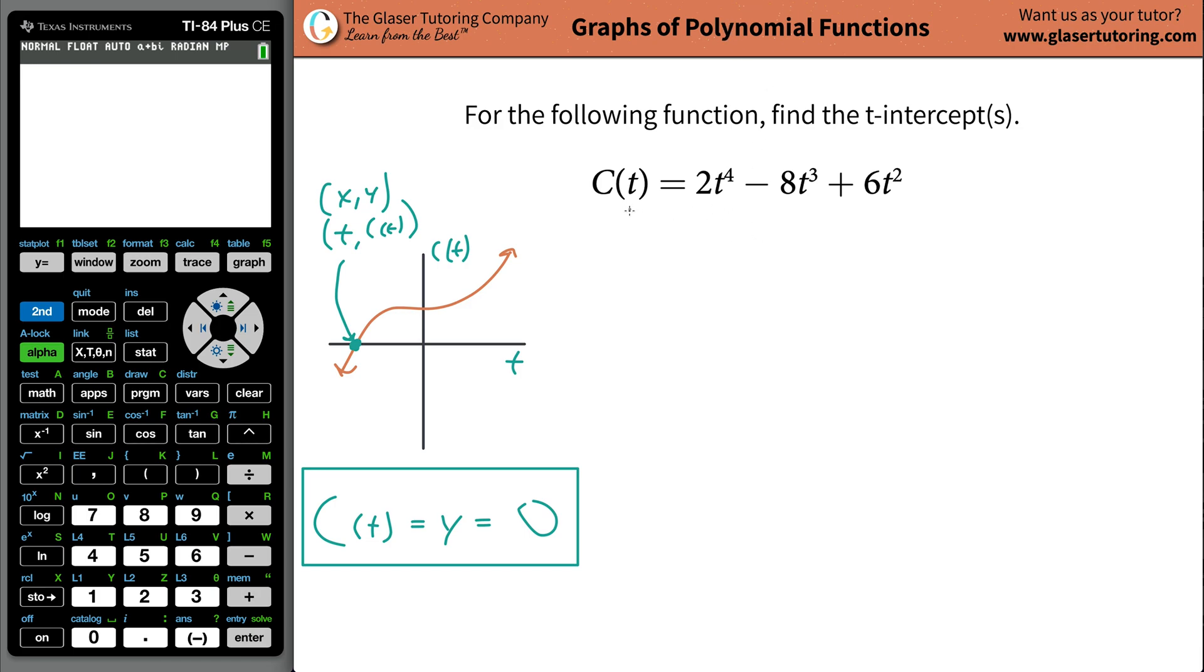In other words, plug zero in for C(t). So what we're trying to now ascertain is the value of t that causes the right-hand side to be equal to zero. Now, just before you start doing any kind of crazy stuff, just look at it. Tell me, give me a value for t. Go ahead. Give me a value for t that if I were to plug it in, it would equal zero. What do you think?